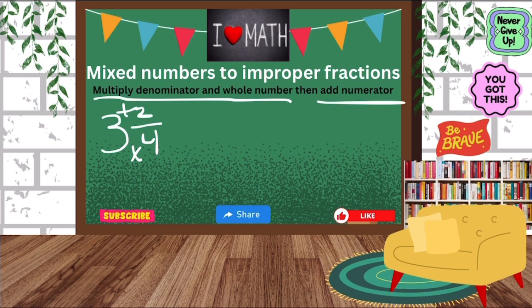So 4 times 3 is 12. And then 12 plus the 2 is 14. So our final answer will be 14 over 4 because our denominator stays the same. It does not change. You just bring it over. So that's how we convert a mixed number to a fraction or a mixed number to an improper fraction.